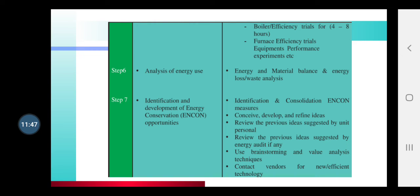Step seven: Identification and development of energy conservation opportunities. INCON is an organization that gives you a standard way — it tells you where consumption should and should not be at certain levels. The INCON measure is a standard measure; you have to measure against it. If the rating matches the INCON standard rating, then it is okay. You have to develop and refine ideas for how you can do energy conservation there.